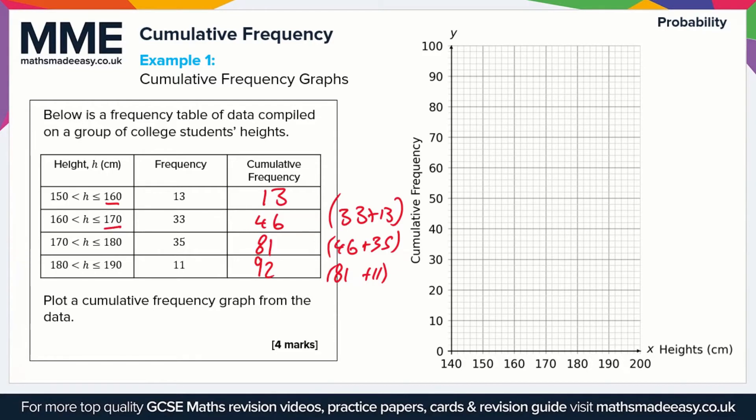Where we're going to plot the graph is at the end of each class interval. This basically means that up to a height of 160 centimeters, the total frequency is 13, 13 students that is. So this is going to be our first point. We go to 160 and then we go up to 13. Simple enough. Then for the next one, we go to 170 and then up to 46, so 46 is about here.